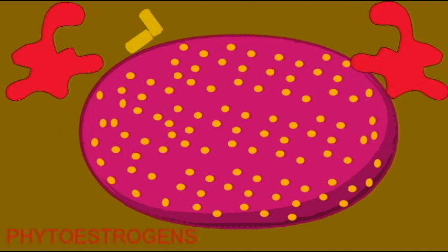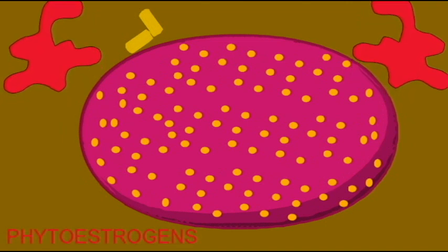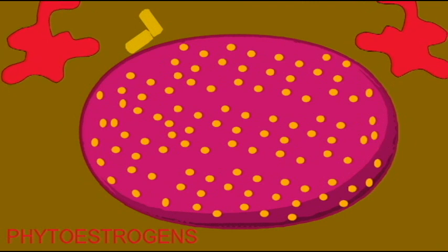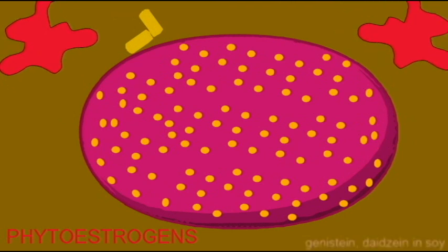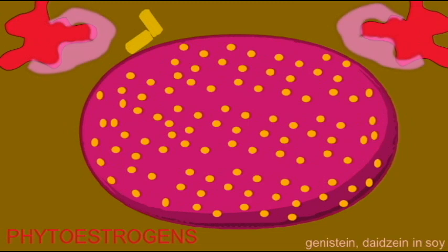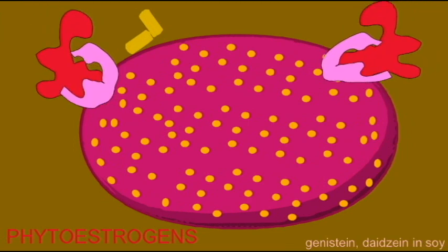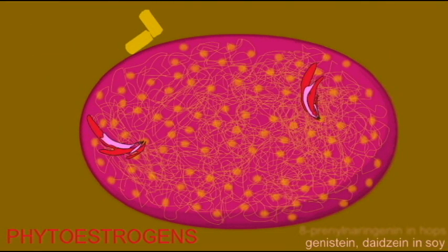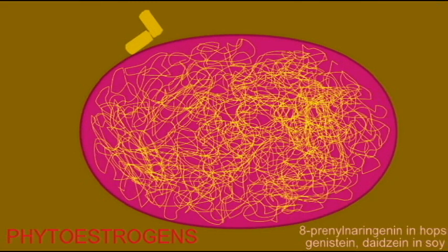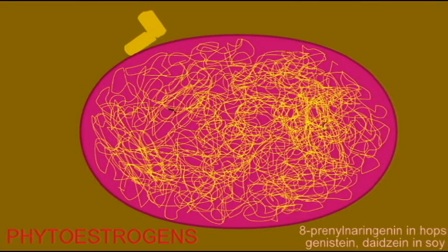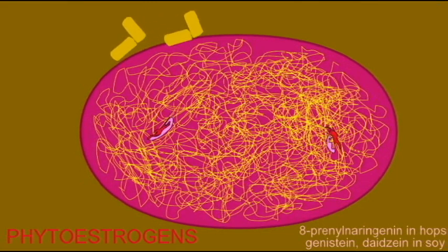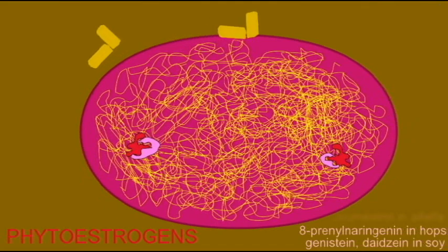Estrogen receptors can be classified as promiscuous. This means that they actually can bind to things other than estrogen itself. So there is a range of chemical compounds which act like estrogen because even if they are not estrogen, they bind the estrogen receptor and turn on the same genes which estrogen would, including those genes which promote cell division.